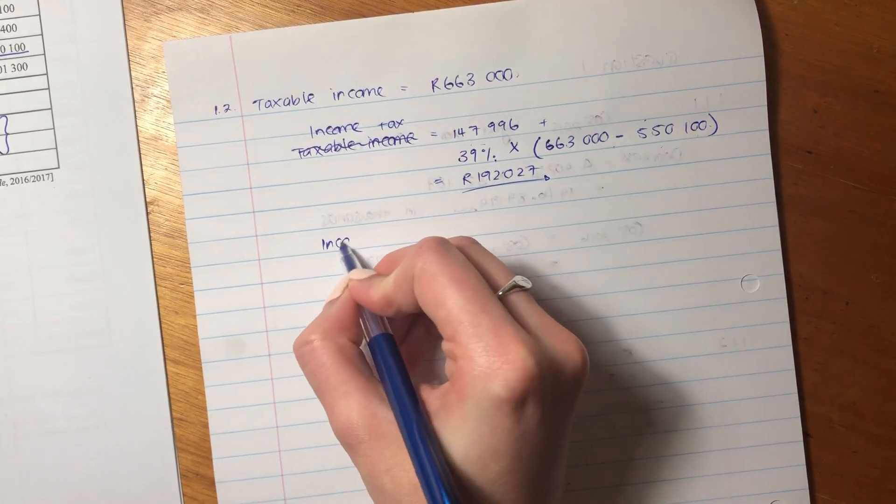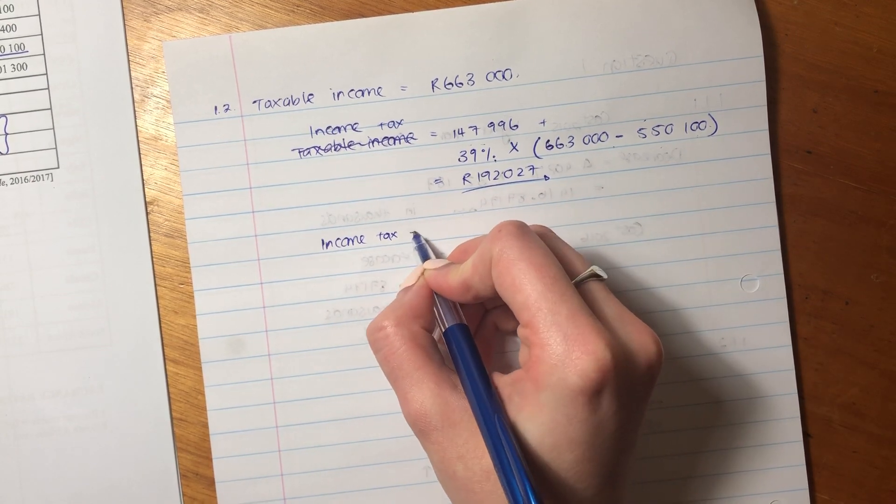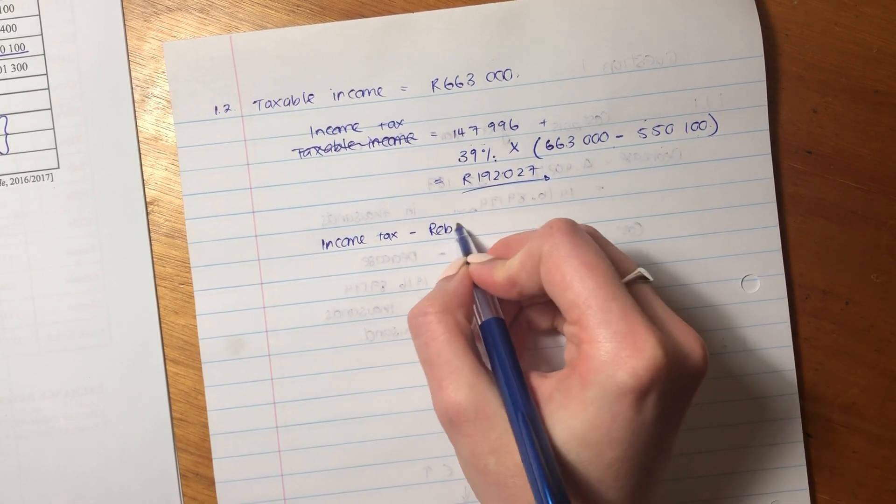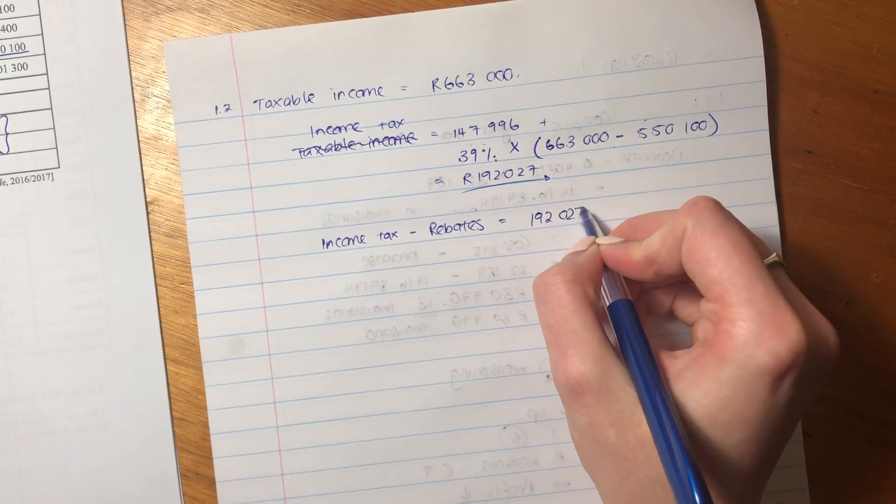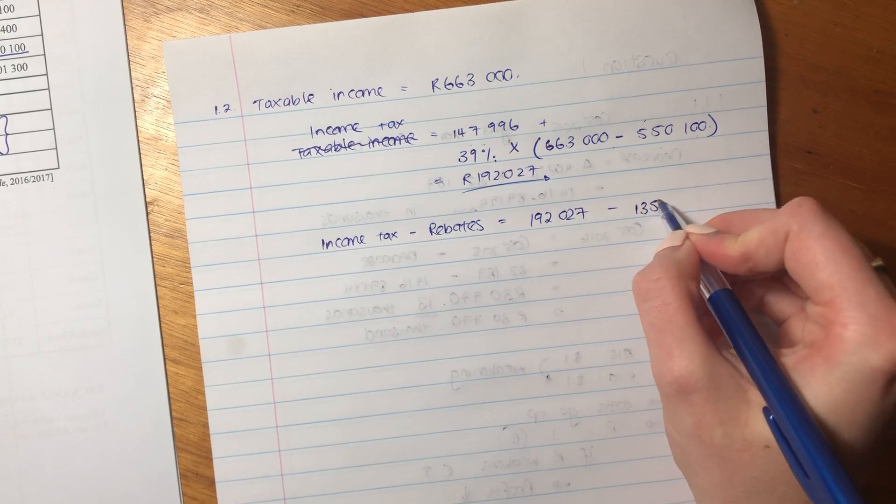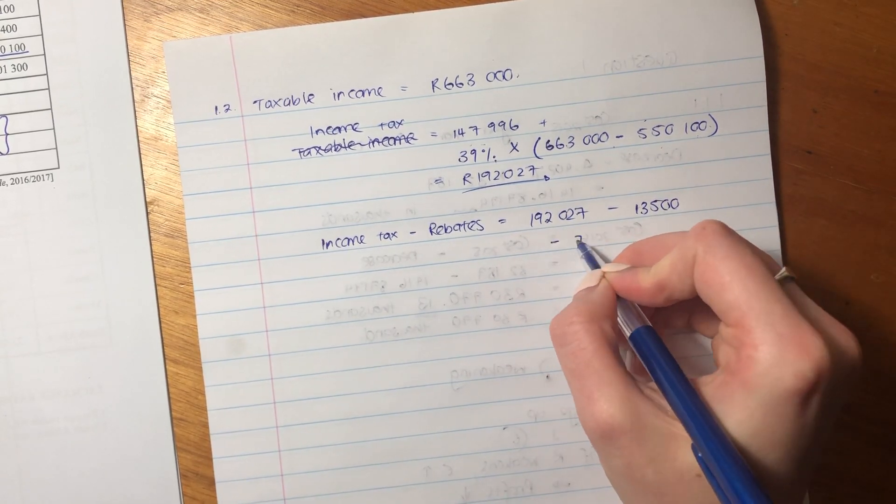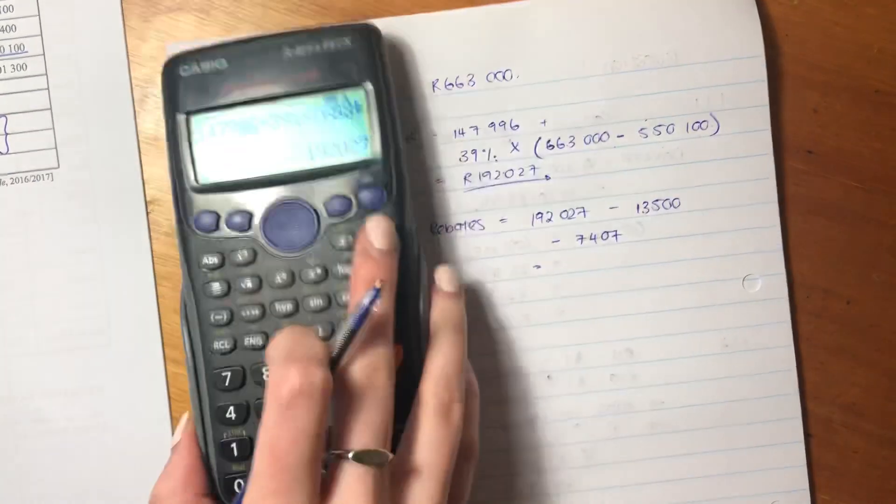So now we're going to say income tax minus rebates, subtract rebates. So we're going to say $192,027, subtract the primary rebate, subtract the secondary rebate. Okay, so put that in.